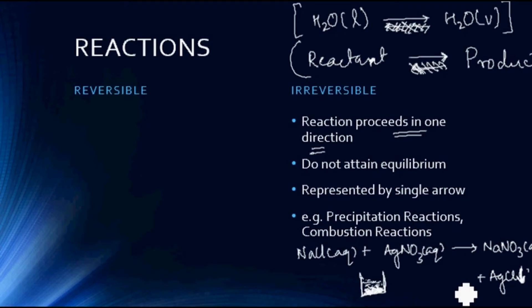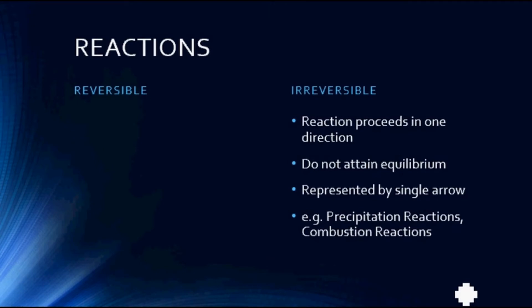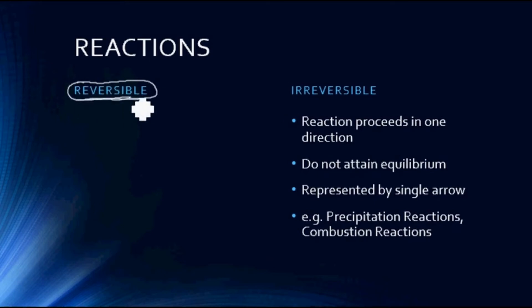Similarly, combustion reactions generally tend to be irreversible in nature. For example, the combustion of magnesium — that is, the reaction of magnesium with oxygen to give MgO — is an example of an irreversible reaction. There are several irreversible reactions, but most of the reactions you will come across in your syllabus will actually be reversible reactions, though you might not study them as such.